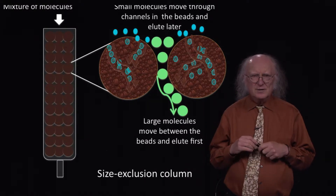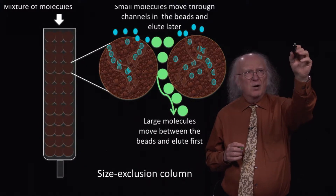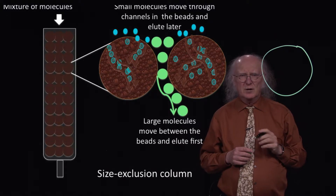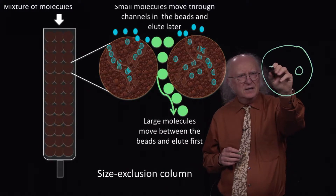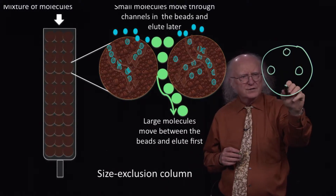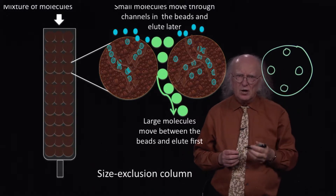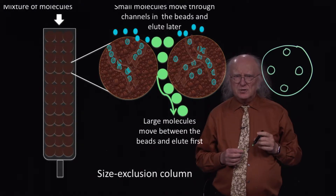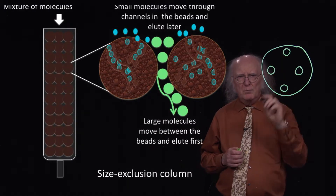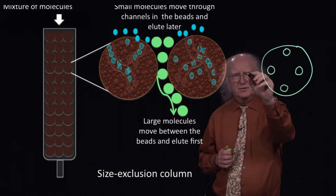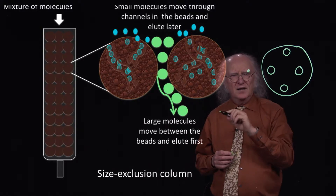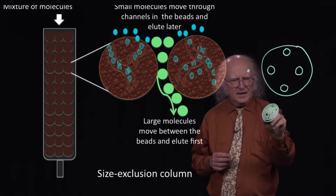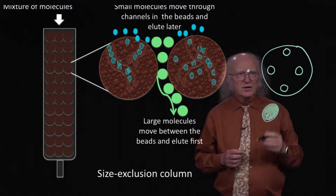In molecular exclusion chromatography, these beads that we use have various holes within them. Those holes, as also shown on the slide here, have a fixed size — a fixed dimension — that will only allow molecules of a specific size to fit into them. So if I have molecules that are small, they will fit in, whereas if I have molecules that are much bigger, they will not fit in.